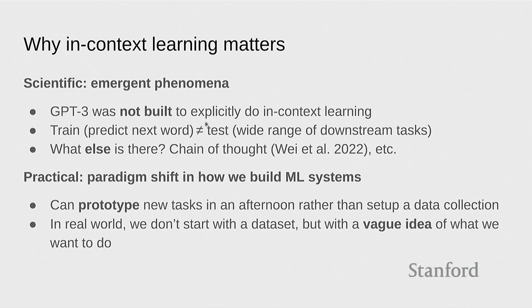And the interesting thing about emergence is that in-context learning is just one example. People have looked at other emergent behaviors like chain of thought and so on. There's a vast set of capabilities that we're barely scratching the surface of. On the practical side, in-context learning really presents a paradigm shift in the way we build ML or AI systems. You can now prototype new tasks in an afternoon rather than setting up some elaborate data collection process. In the real world, things don't come prepackaged with a dataset you can just download from Hugging Face. There's usually a vague idea of what you want to do and some messy data.